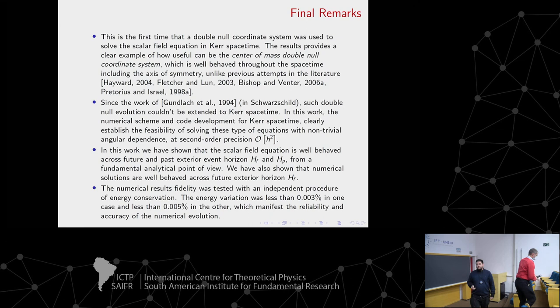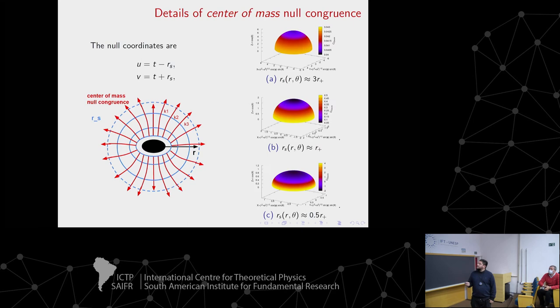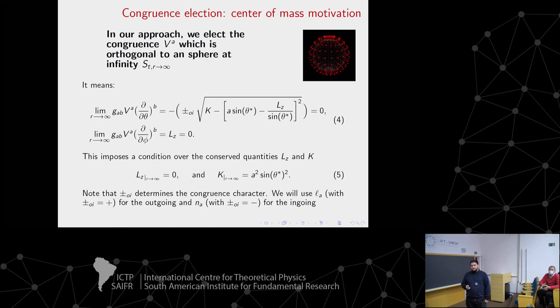Thank you for the nice presentation. As you were presenting, I was trying to intuitively connect your work to the basics. On the slide showing the constants of motion, L is related to angular momentum. So when it's zero, those are the special geodesics that can reach the North Pole and South Pole. Does this condition imply that this work only applies to polar geodesics - the geodesics which can only pass through the poles?